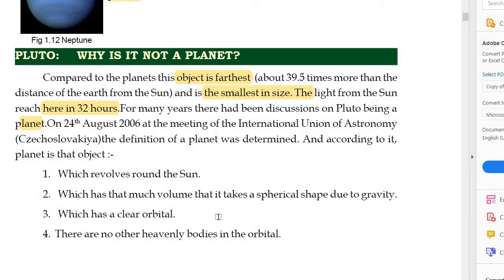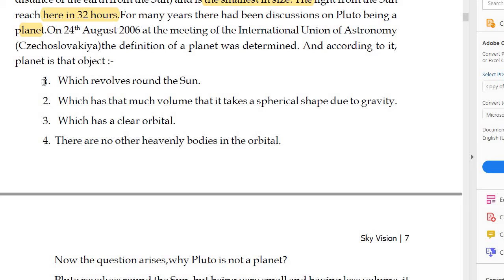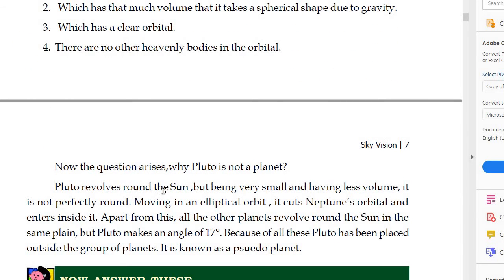These are the standard parameters determined at the International Union of Astronomy conference. When we apply these standards: Pluto does revolve around the sun, but its size is very small and its volume is less, so it is not perfectly round. Also, it moves in an elliptical orbit, not a circular orbit.